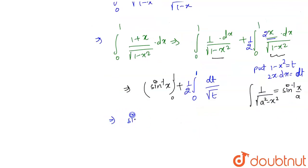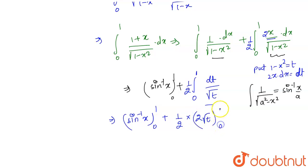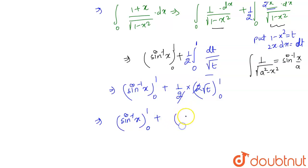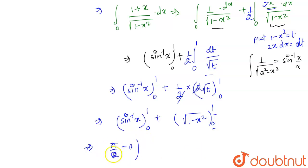The result is sin⁻¹(x) from 0 to 1, plus (1/2) times 2√t — the 2s cancel — giving √(1−x²) from 0 to 1. Applying the limits: sin⁻¹(1) − sin⁻¹(0) = π/2 − 0 = π/2. For the second part, putting x=1 gives 0, and x=0 gives 1, so the result is 0 − 1 = −1.